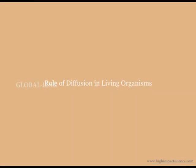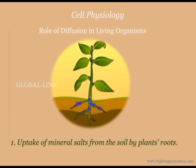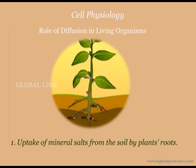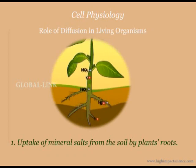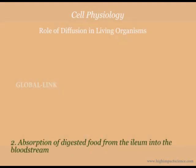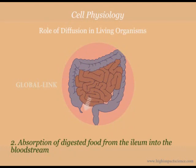Role of diffusion in living organisms. Diffusion is involved in the absorption of materials in plants. Many salts dissolve in water to form ions, which are small enough in size to pass through the pores of the cell membranes of the root hairs. This process takes place when the concentration of ions is higher in the soil water than in the root hair cells. Digested foods, for example amino acids and glucose, diffuse across the walls of the ileum into the blood for transport to other parts of the animal body.